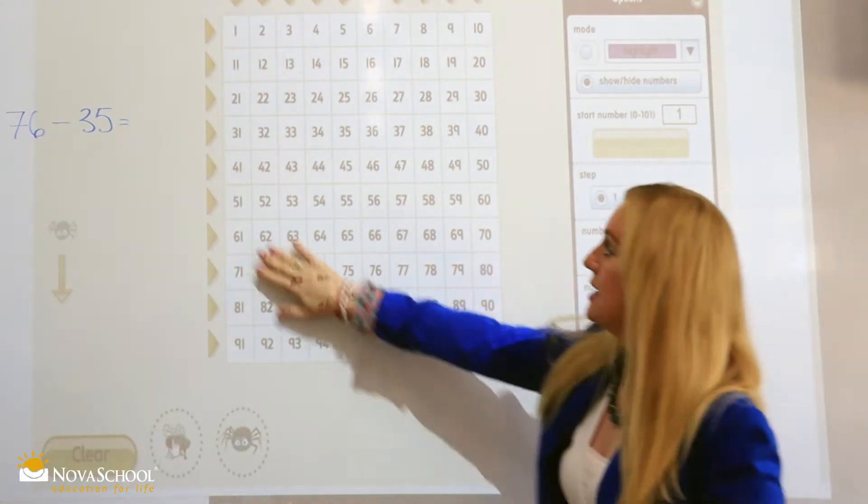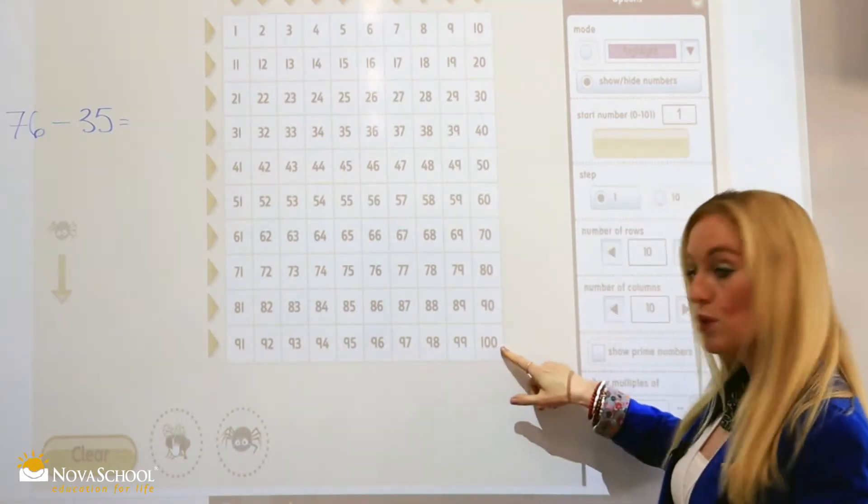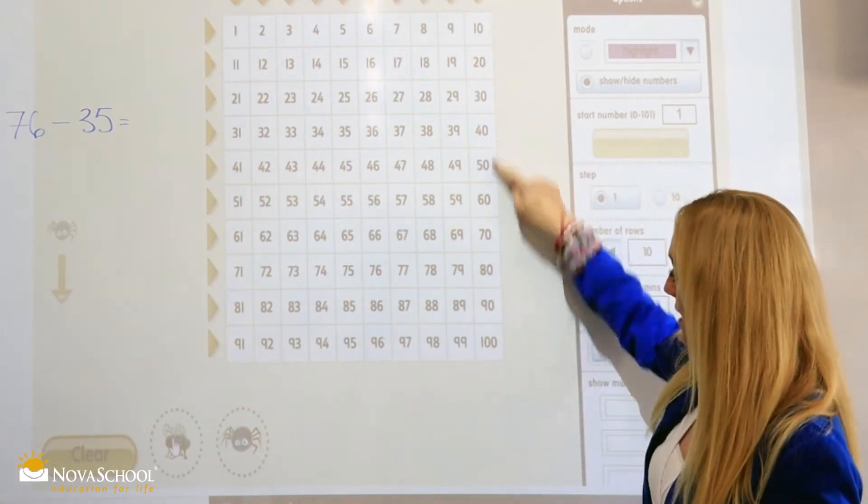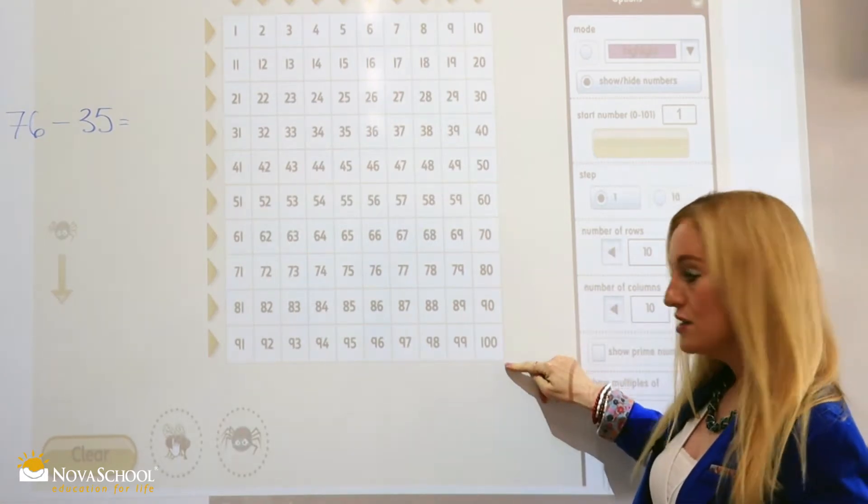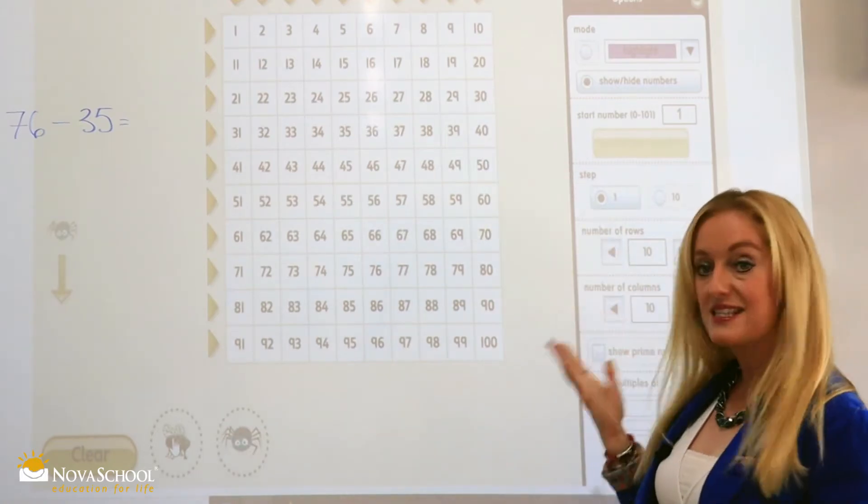This is a hundred square, okay? There are a hundred numbers on here. We go across in ones and we go up and down in tens. So forwards and backwards in ones and up and down in tens.